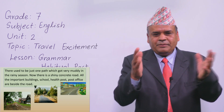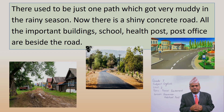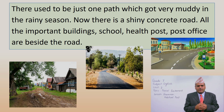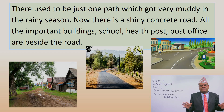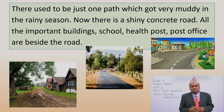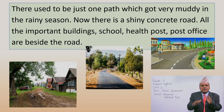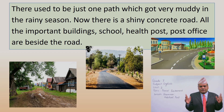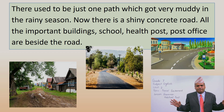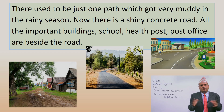Let's see the next pictures. There are three different pictures. In the first picture it's muddy — when it rains or water flows on the road it becomes muddy. This is not a pitch road, this is a muddy road. It was in the past. At present you see a pitch road and buildings beside the road. There used to be just one path which got very muddy in the rainy season. Now there is a shiny concrete road, and all the important buildings — school, health post, post office — are beside the road.